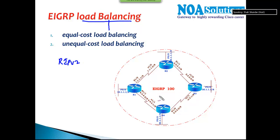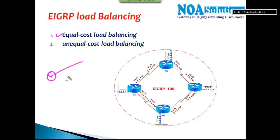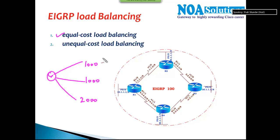There are two types of load balancing. The first is called equal cost load balancing. When we say equal cost, we assume we have two or more routes — say three routes — where the cost on the first route is 1000, the second route is 1000, and the third route is 2000. The least cost is the best route, which means 1000, and since we have two routes with that cost, it will load balance between both.